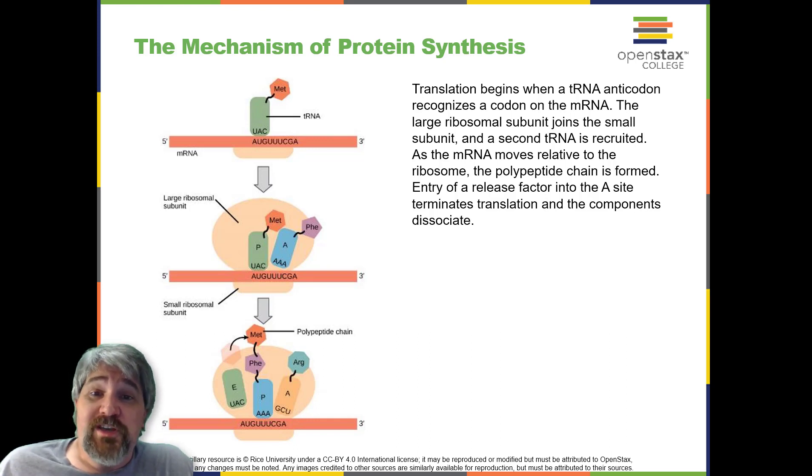Termination of translation occurs when a stop codon UAA, UAG, or UGA is encountered. When the ribosome encounters the stop codon, the growing polypeptide is released and the ribosome subunits dissociate and leave the mRNA.